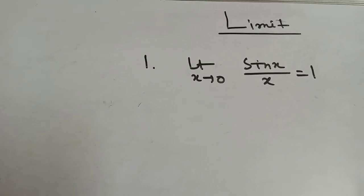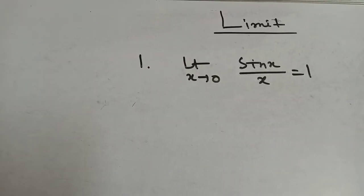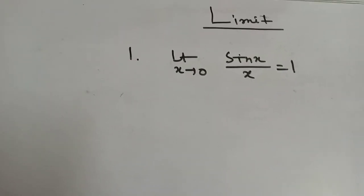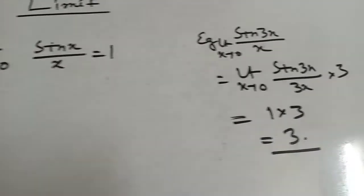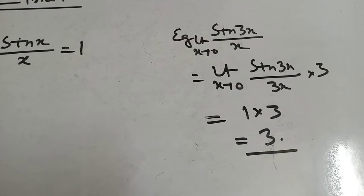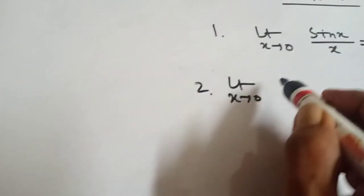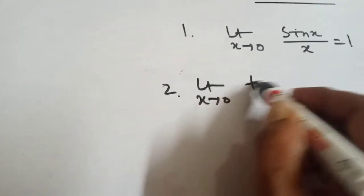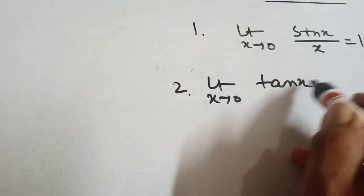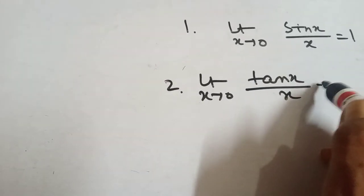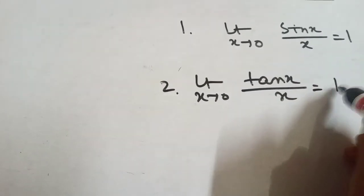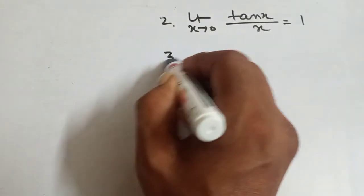Like this way. That means limit x tends to 0 sin x by x equal to 1. This is one example. Next, formula 2: limit x tends to 0 tan x by x equal to 1.